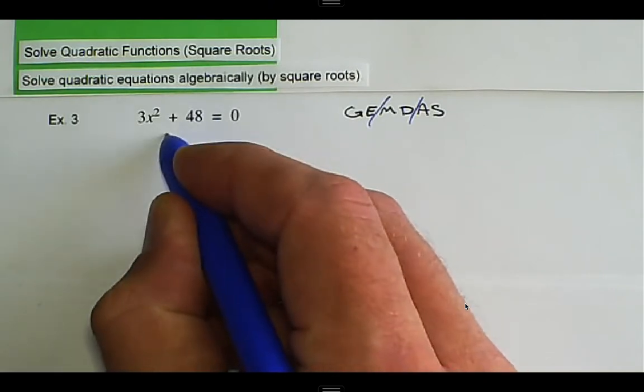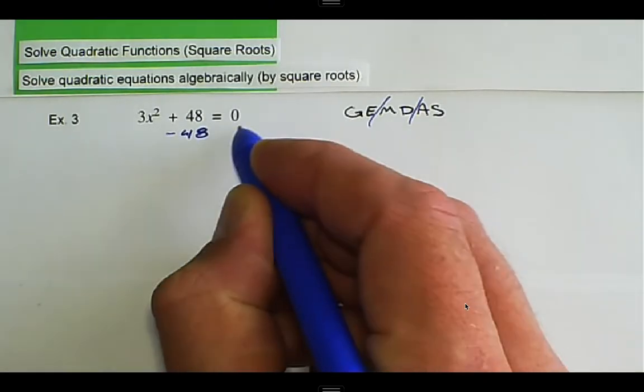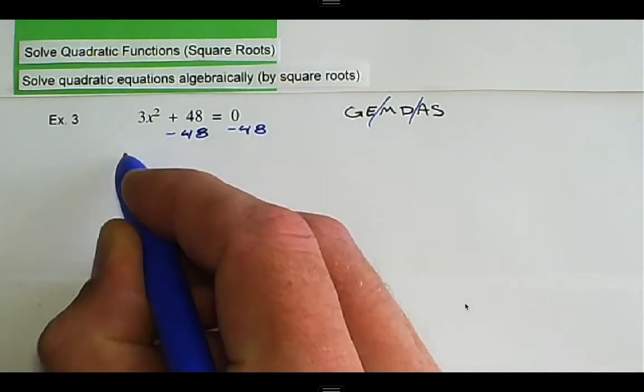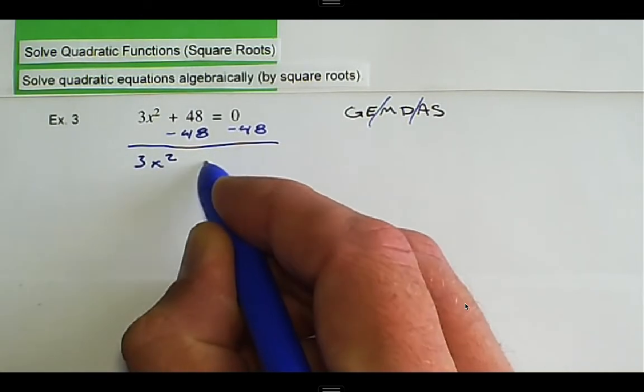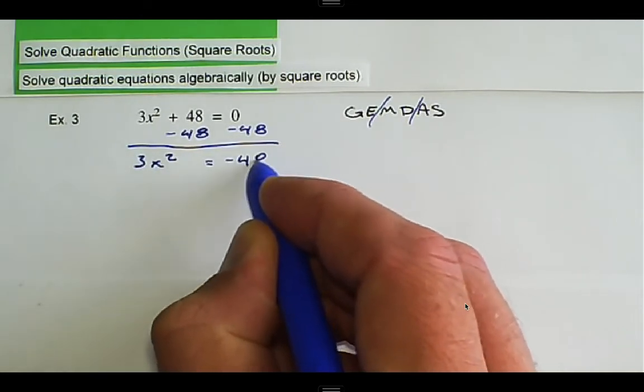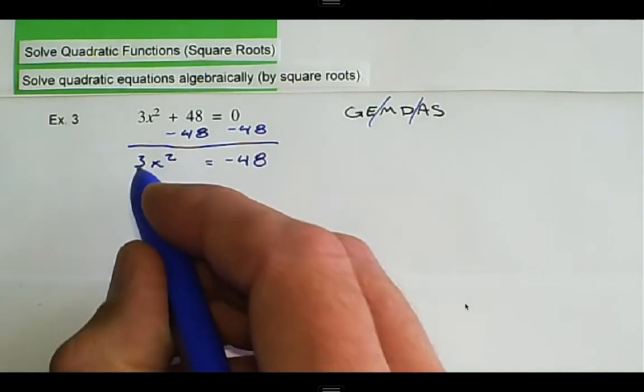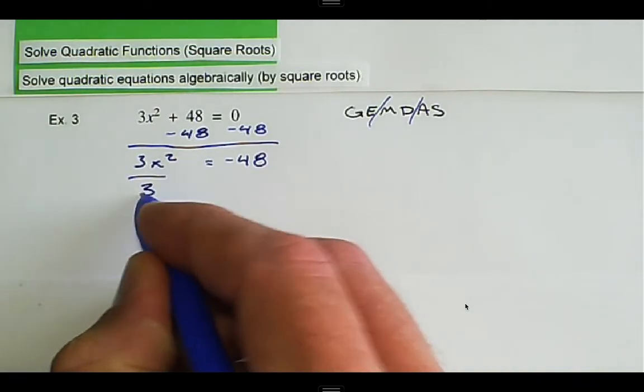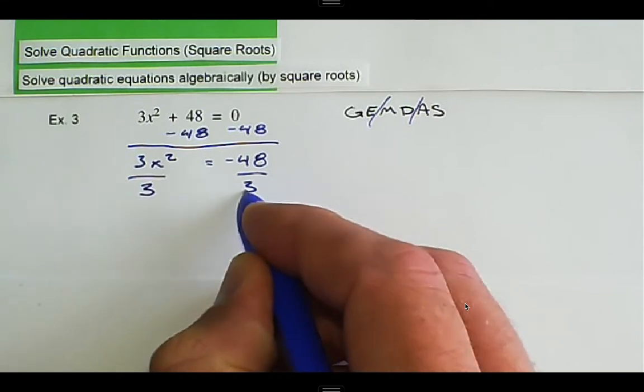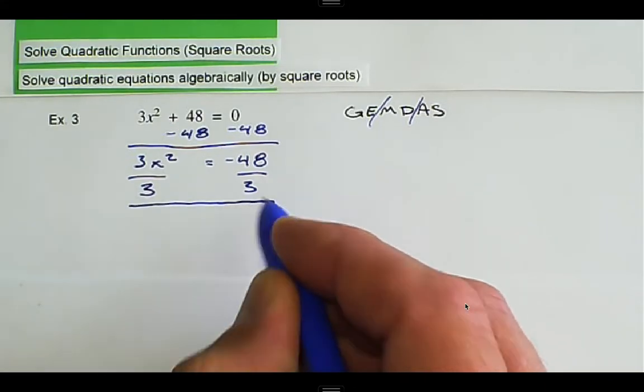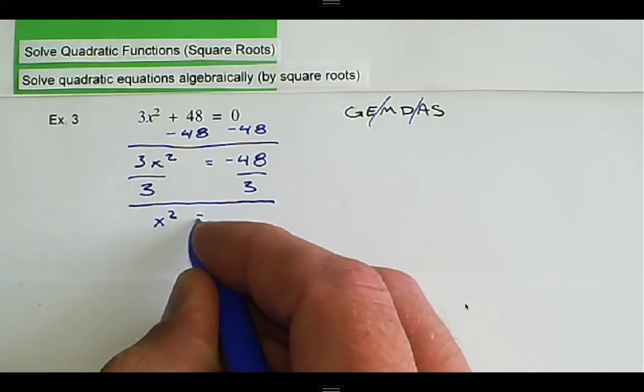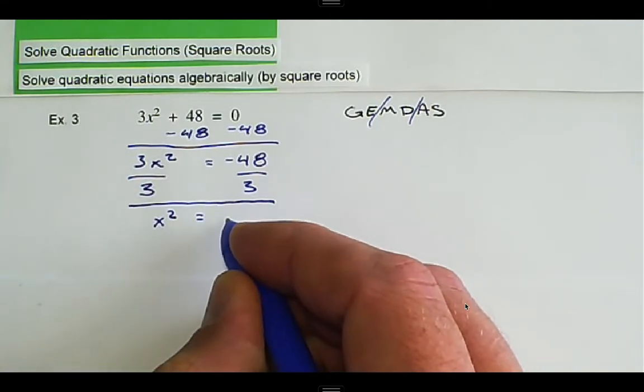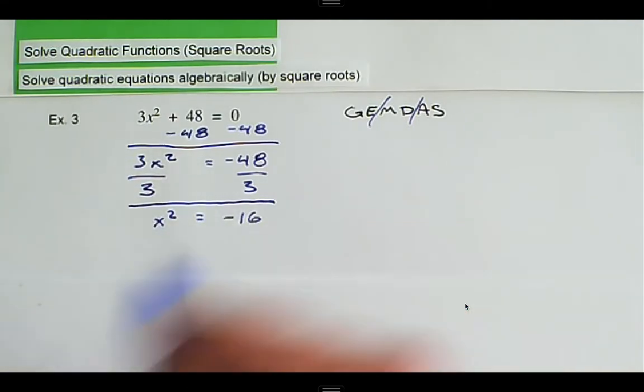The first thing we see is addition, so we can subtract 48 from both sides, and then we get 3x squared is equal to negative 48. Now we can divide by 3 and we get x squared equals negative 16.